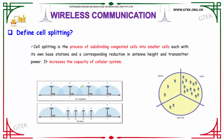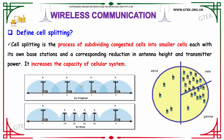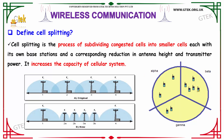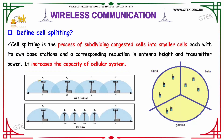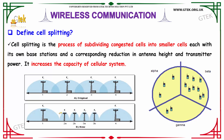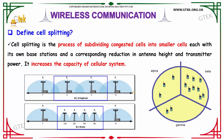What is meant by cell splitting? Cell splitting is the process of subdividing congested cells into smaller cells, each with its own base station and the corresponding reduction in antenna height and transmission power. This increases the capacity of the cellular system. By varying the height of the antenna and the transmitted power, congested cells can be reduced into smaller cells, enabling faster communication.